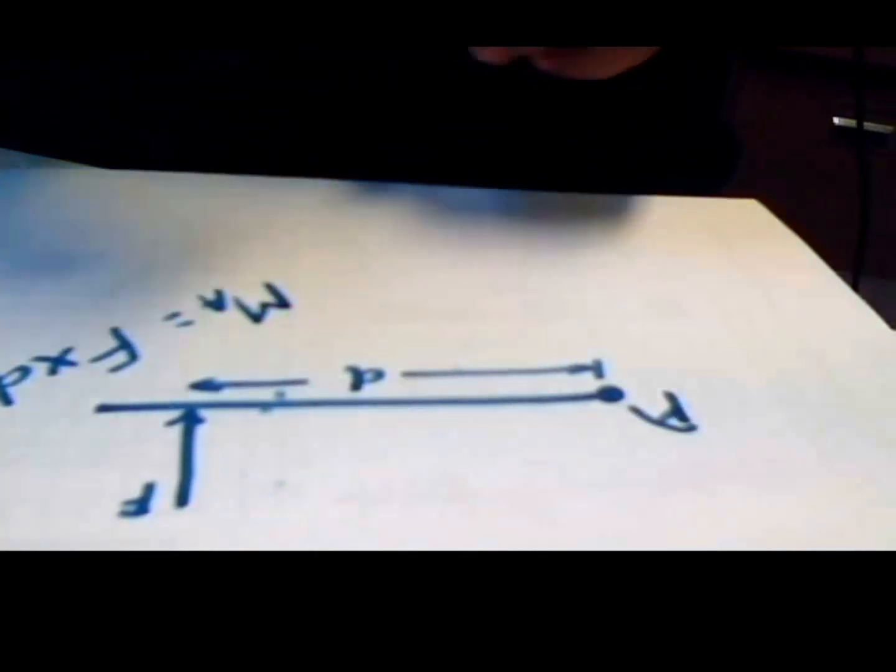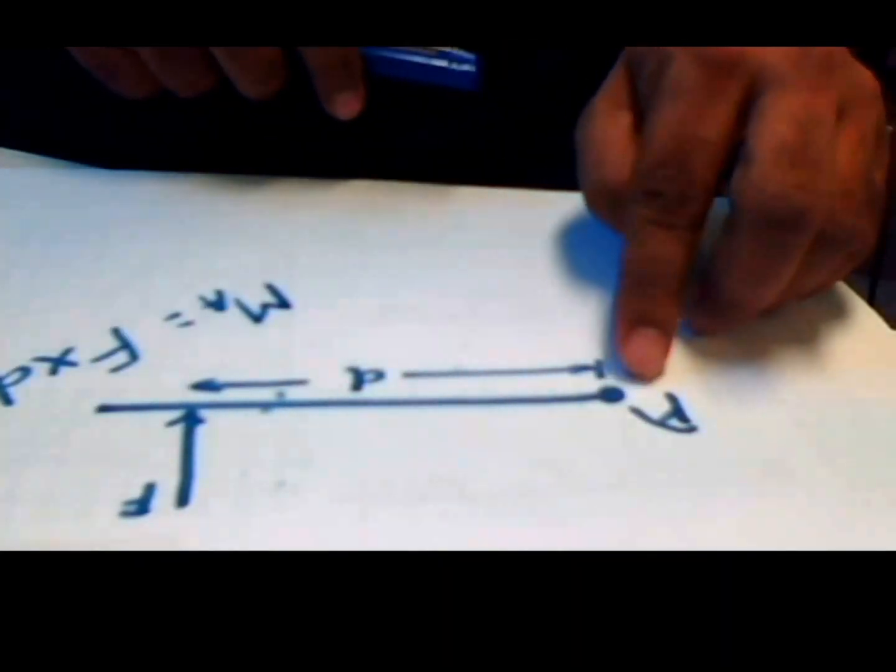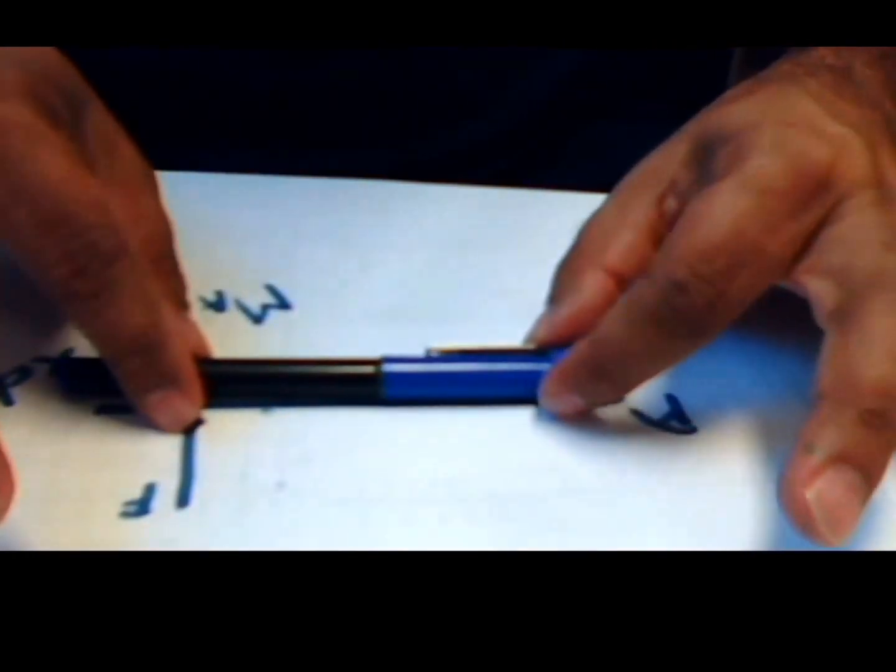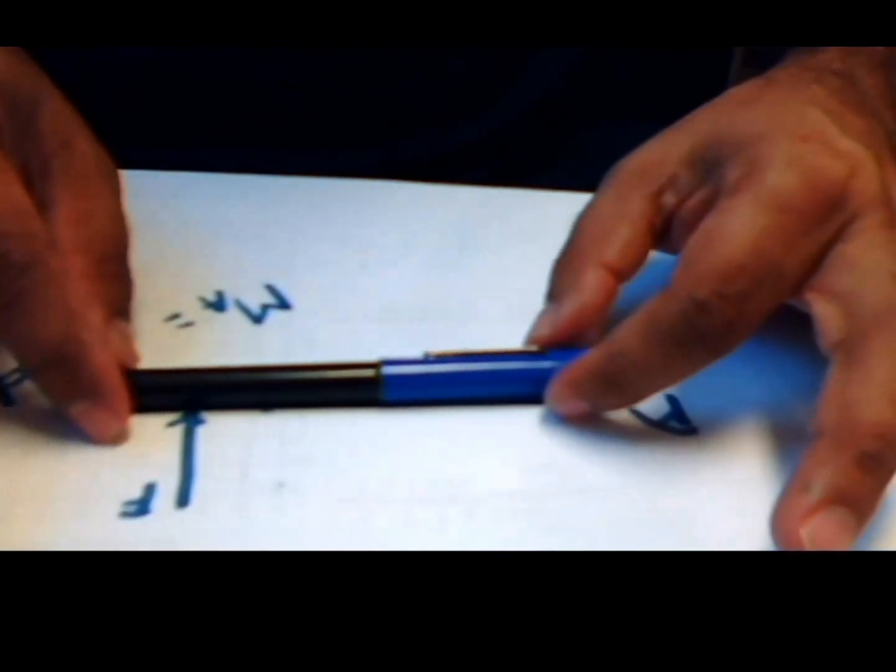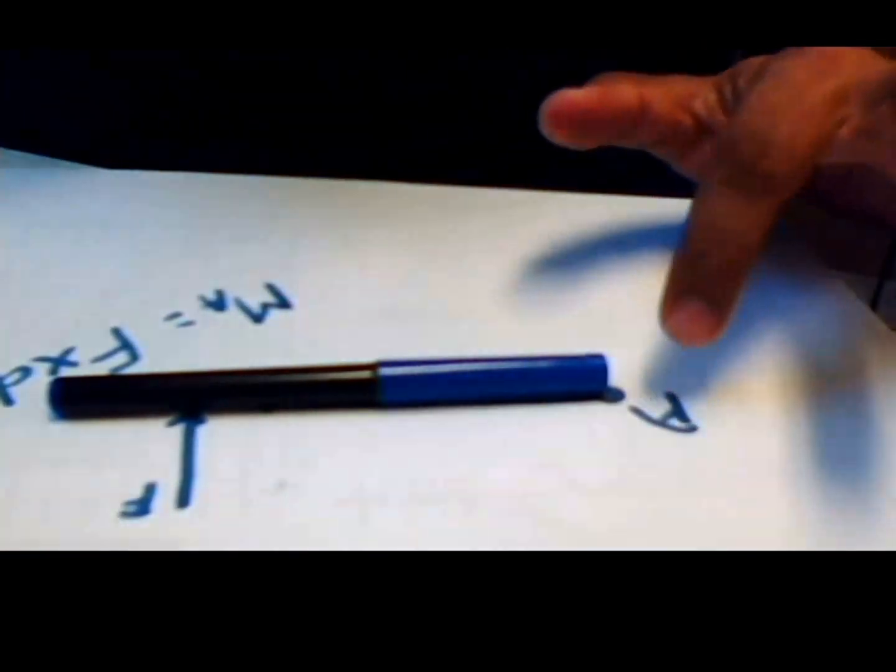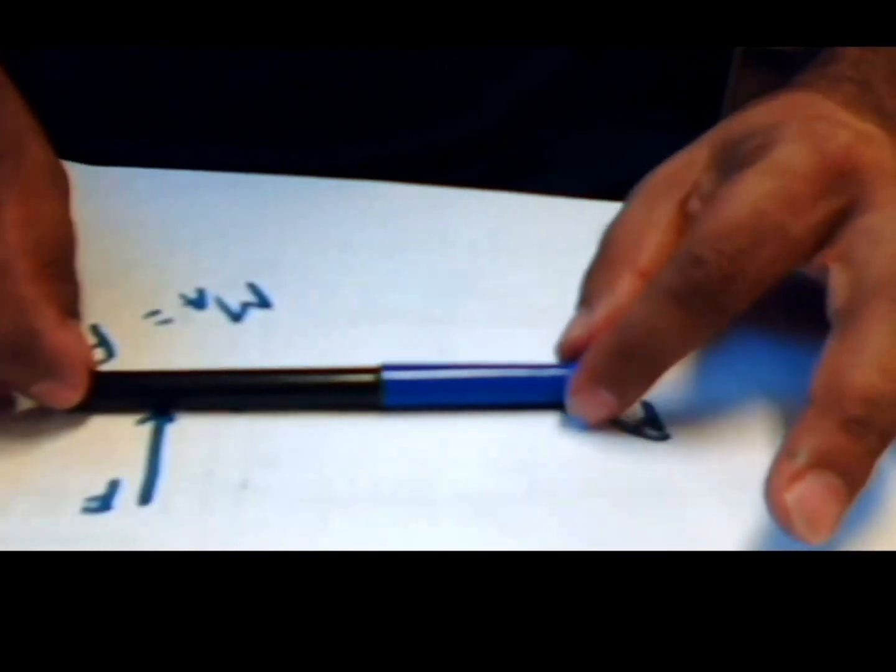To understand this, let's assume this is a beam and we want to calculate a rotation about point A. Put this pin and assume this as a beam. We are applying force F on the beam. Assume A is a pivot and press at A with your finger so that it will not move in X direction and it will not move in Y direction. Just fix it, make it a pin support.